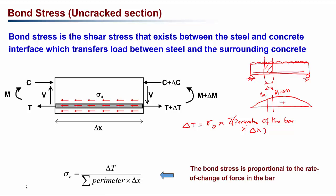Rearranging the equation, the bond stress sigma b equals delta T over the surface area of the reinforcement. So the bond stress is proportional to the rate of change of the force in the bar.